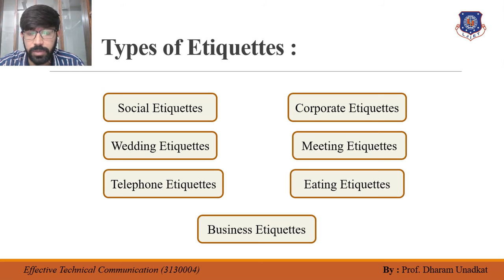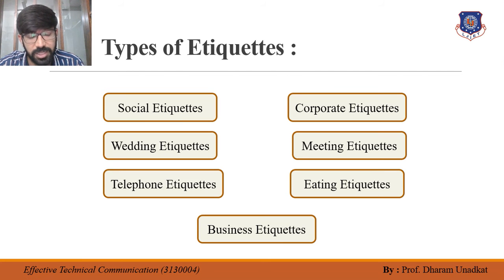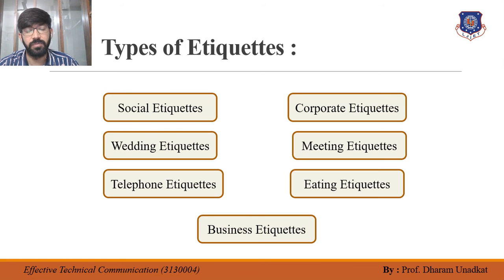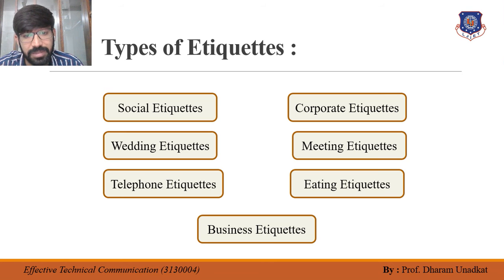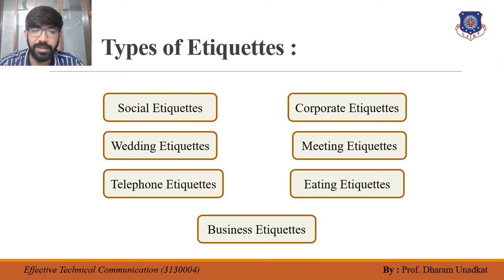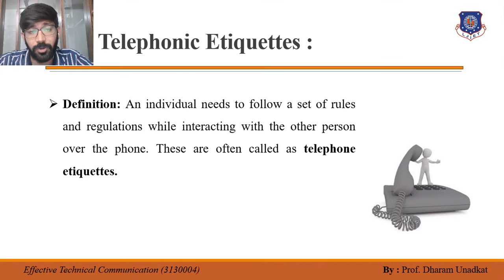Next comes telephonic etiquette, which is very important in the corporate world. It is essential to learn how one should interact with another person over the phone. Next comes eating etiquette — one must follow a certain decorum while eating in public. Don't make noise while eating, and one should not leave the table until everyone has finished eating. Next comes business etiquette, which includes the way to conduct business — never cheat the customers, as it is simply unethical. So these are the seven types: social, corporate, wedding, meeting, telephonic, eating, and business etiquette.